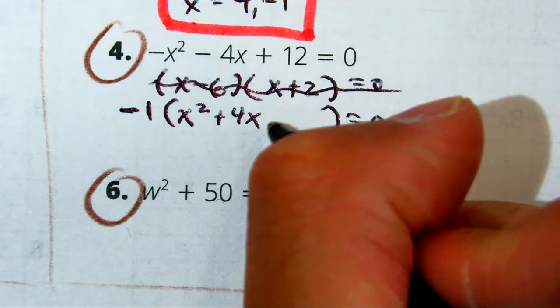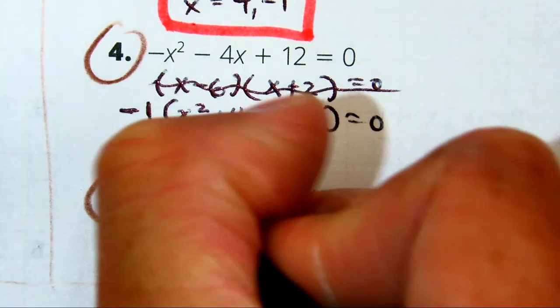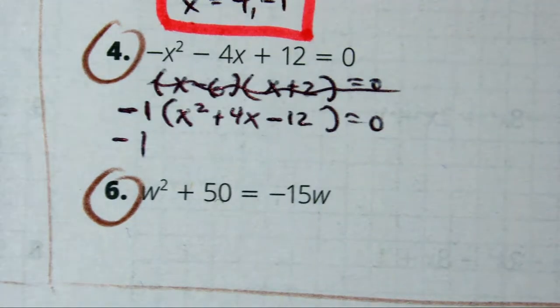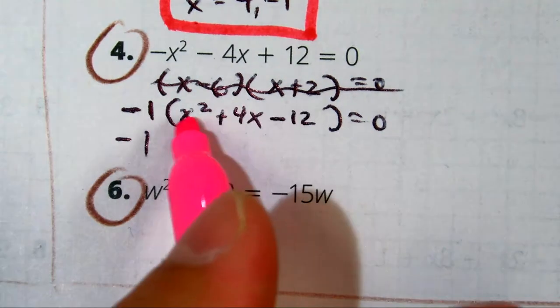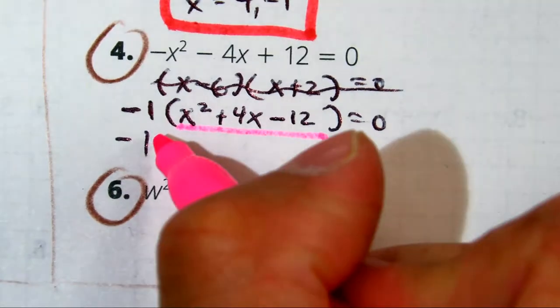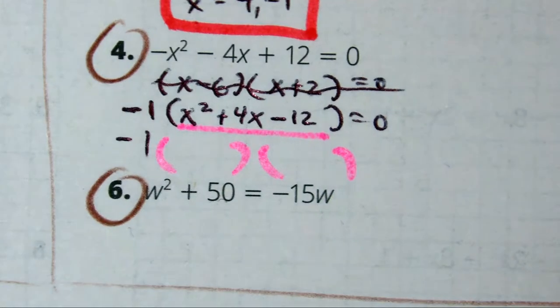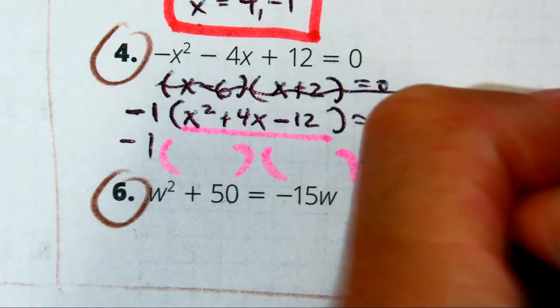So, negative 1 times this equals a positive. Negative 1. Okay, now, Tony, inside your parentheses, if you factor this one, what do you get?